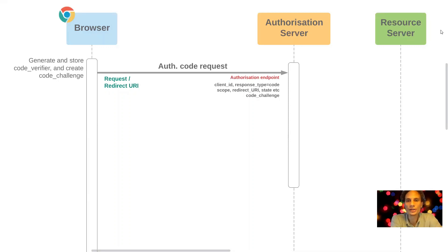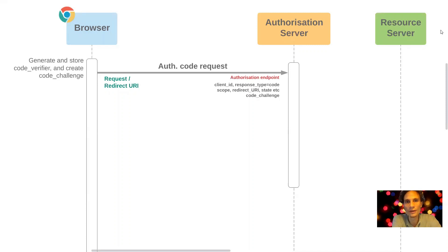The redirect URI is set to the URL that the authorization server needs to redirect the browser back to with the authorization code when issued. The state parameter serves two purposes: to persist information between the request and the response, and as a security parameter to protect against cross-site request forgery. Part of the state can be set to a random value that the authorization server sends back in the redirect, which the client checks to ensure the two match.